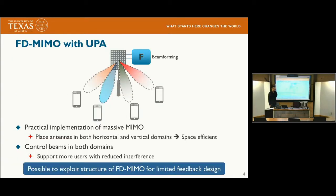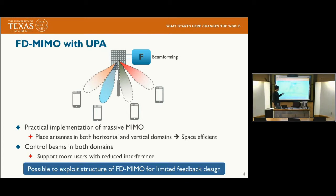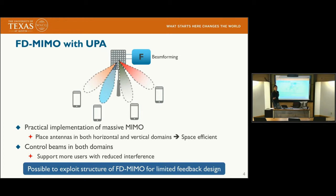FD-MIMO, or FDD MIMO using a uniform planar array, is a practical implementation of Massive MIMO. By placing antennas in both horizontal and vertical domains, it is possible to deploy more antennas in limited space. The base station can control beams in both horizontal and vertical domains to support more users with reduced interference. We can also exploit this UPA structure to improve quantization performance or reduce feedback overhead.